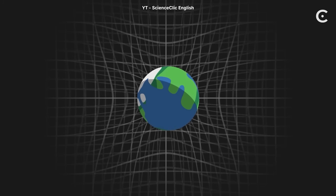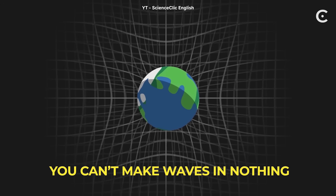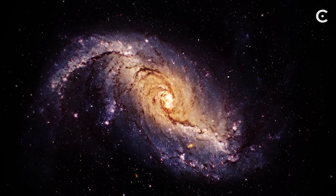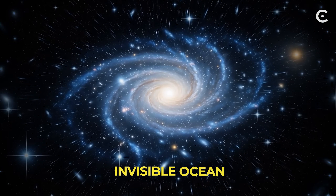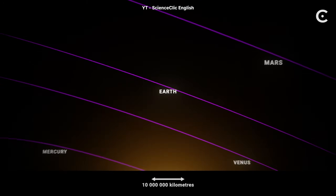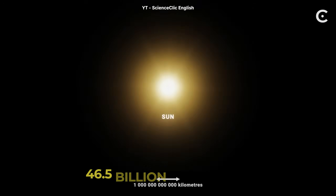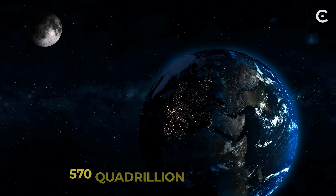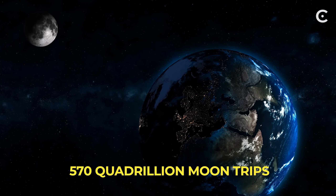Space-time isn't empty — it's not nothing. It's actually more like something. If space-time were truly empty, like absolutely nothing, then mass would have nothing to bend. It would be like trying to make waves in nothing — impossible. Instead, imagine space-time is an invisible ocean that fills everything, from here to the edge of the observable universe, 46.5 billion light-years away. That's like travelling from Earth to the Moon and back about 570 quadrillion times.